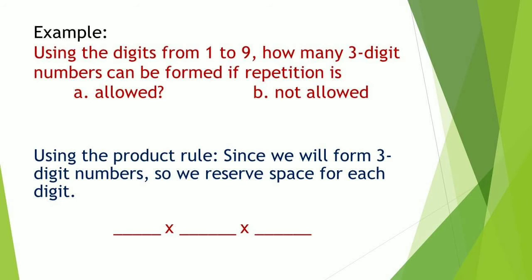Now, for another example: Using the digits from 1 to 9, how many 3-digit numbers can be formed if repetition is A allowed, B not allowed? In this case, using the product rule, since we will form 3-digit numbers, we are going to reserve space for each digit.